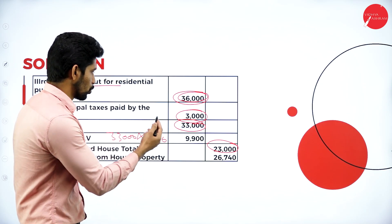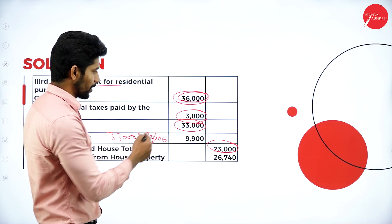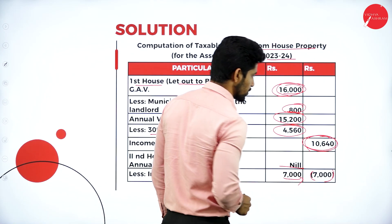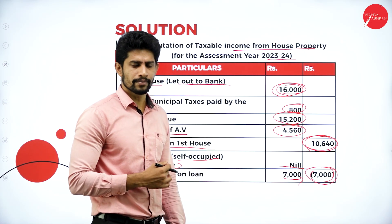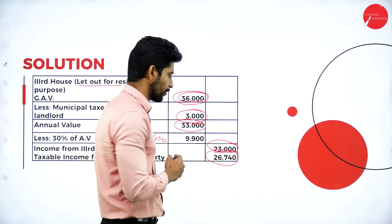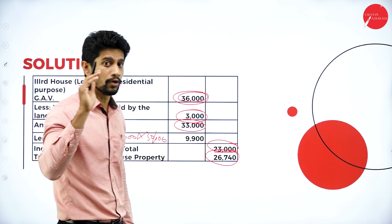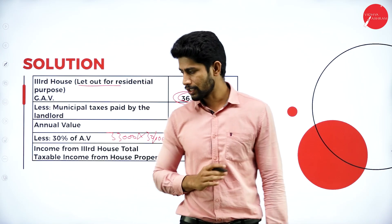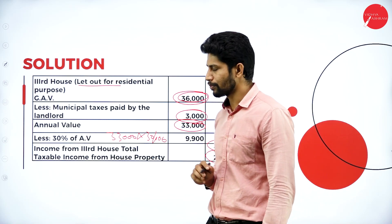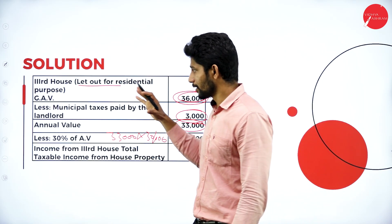Add income from house one (10,640) and house three (23,000), then deduct the loss from self-occupied property of 7,000. The balance of 26,740 is the total income from house property of Ms. Lakshmi for the year 2023-24. This is how you solve a problem when they give all mixed let out and self-occupied properties in the exam. This question carries 15 marks in the main exam.